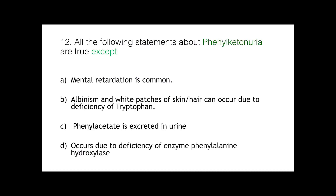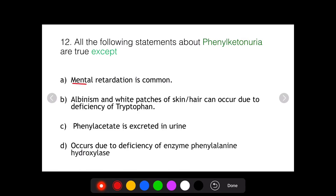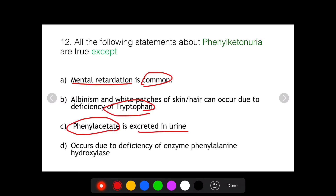The question was: all the following statements about phenylketonuria are true except. The options given were: mental retardation is common; albinism and white patches of skin can occur due to deficiency of tryptophan; phenyl acetate is excreted in urine; and it occurs due to the deficiency of the enzyme phenylalanine hydroxylase.